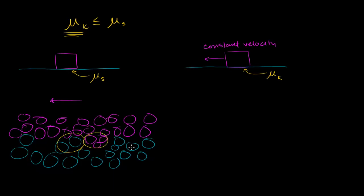Once something is already moving, and this is at least how I think about it, it doesn't have a chance to settle into these little ruts. So let me draw something that's already moving. I'll try to draw a similar surface. So I'm trying to draw the surface that looks essentially just like the one I drew.